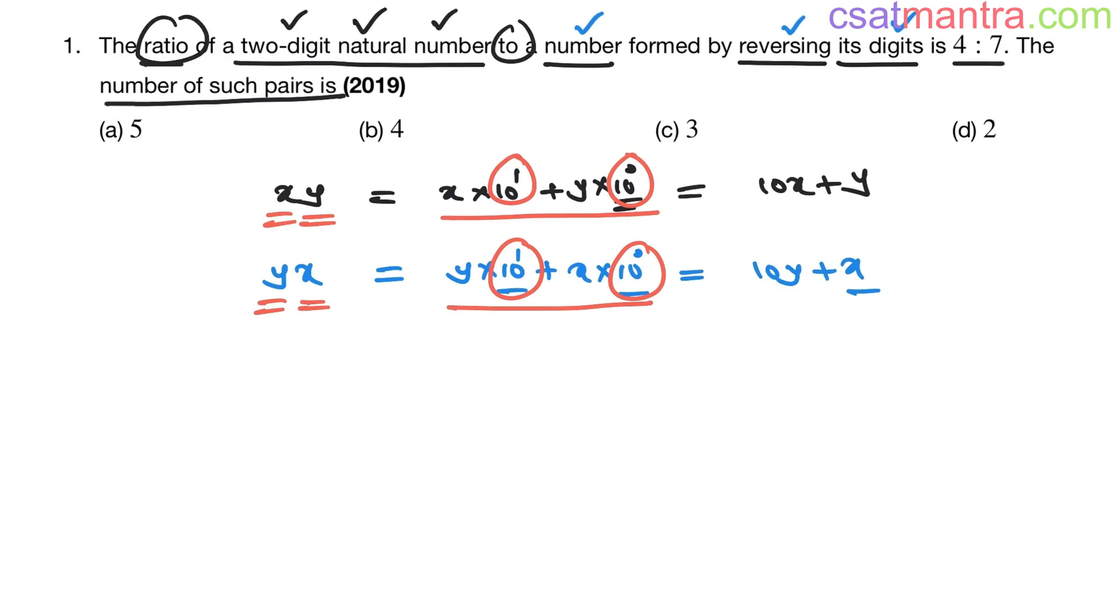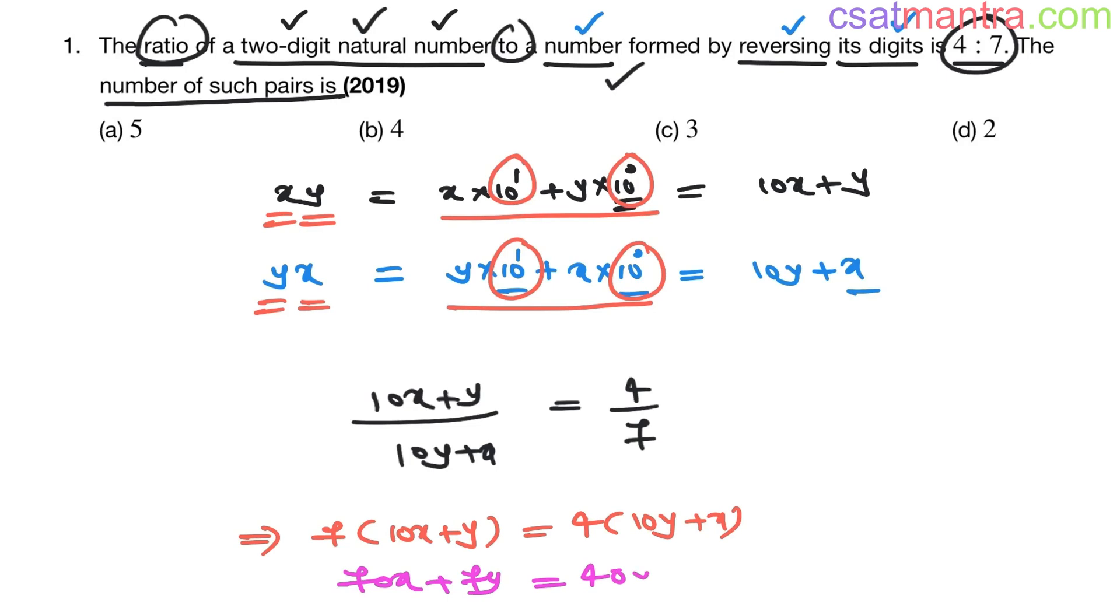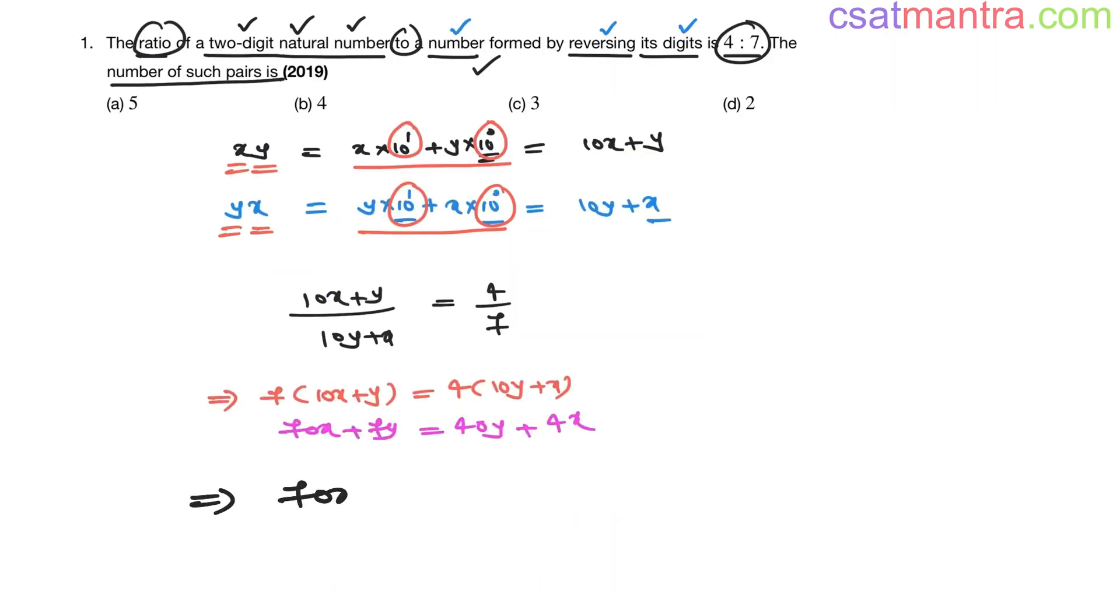The ratio of this number to this number is 4 is to 7. So, 10x plus y by 10y plus x is equal 4 by 7. Now, doing cross multiplication 7 into 10x plus y is equal 4 into 10y plus x. This is 70x plus 7y is equal 40y plus 4x. Now, bringing all x terms one side and y terms another side. This is 66x is equal 33y.